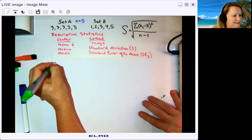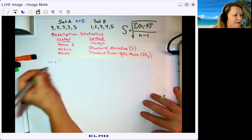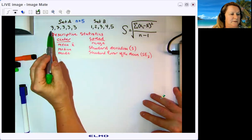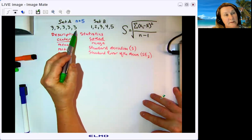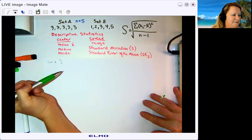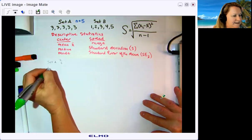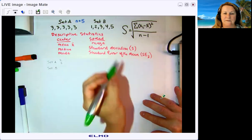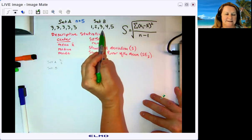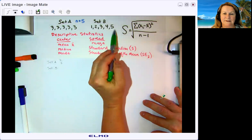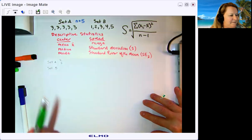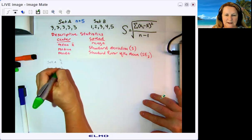For data set A, the mean is three, because three plus three plus three plus three plus three is 15, divided by five, equals three. For data set B, one plus two plus three plus four plus five is also 15, divided by five, so the mean of data set B is three as well. I did that on purpose.